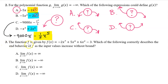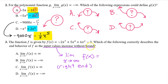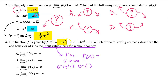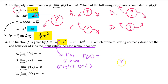Number 3. The function f is given by f(x) = -2x⁷ + 5x⁴ + 6x² - 3. Which of the following correctly describes the end behavior of f as the input values increase without bound? When they say the input values increase without bound, they are talking about the limit as x approaches positive infinity — in other words, the right end behavior. The leading term is -2x to the seventh power. Since the leading coefficient is negative, the end behavior on the right is approaching negative infinity. So the answer is B.